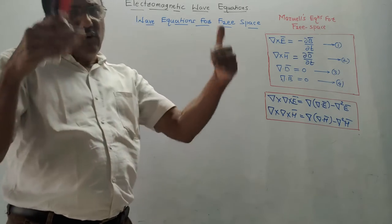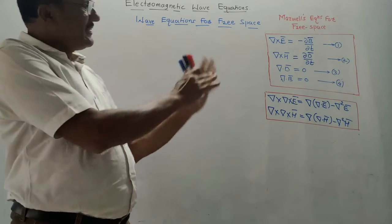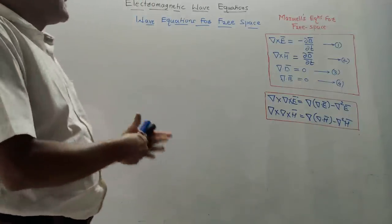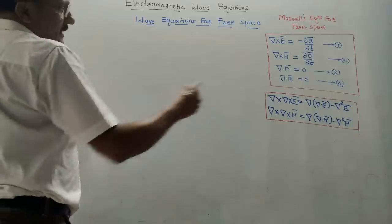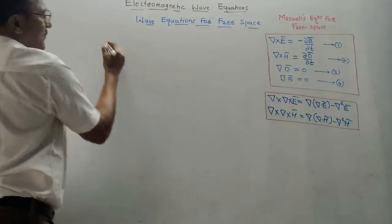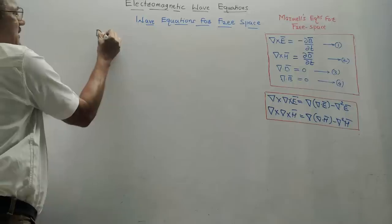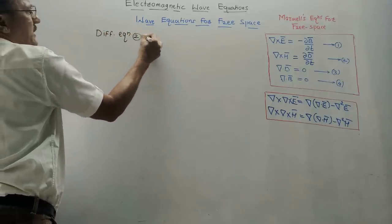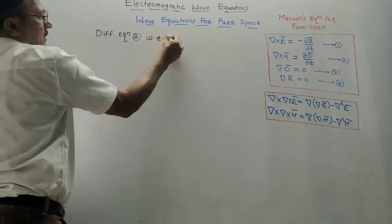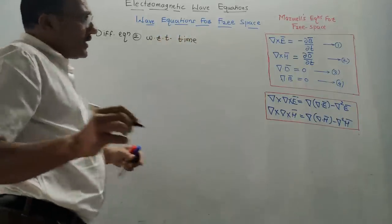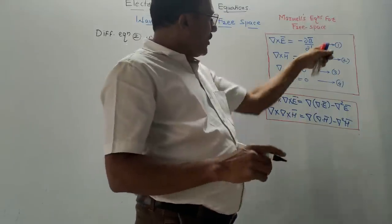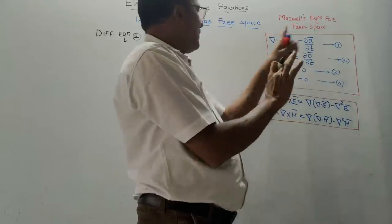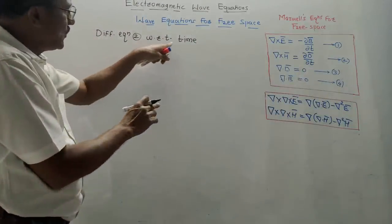If you know these four Maxwell's equations and this vector identity, you can derive the wave equation. The important part is to strictly follow the procedure — I will show you simple tricks to make the calculation easy. The first step is: differentiate equation 2 with respect to time.